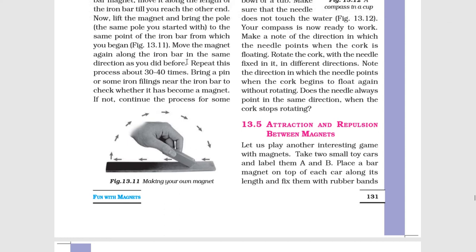Move the magnet again along the iron bar in the same direction as you did before. Jaisa ki pahle kiye thay, usi prakara chumbak ko lohe ki chad ke anudis fir le jana hai. Repeat this process about 30-40 times.